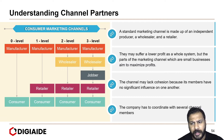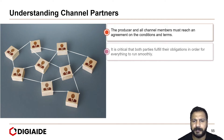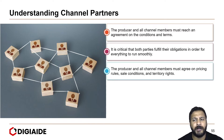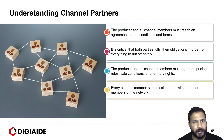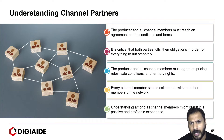The company has to coordinate with several channel members at the same time. The producer and all channel members must reach an agreement on conditions and terms. It is critical that both parties fulfill their obligations in order for everything to run smoothly. They must agree on things like pricing rules, sales conditions, and especially territory rights. Every channel member should collaborate with the other members of the network, as an understanding among all channel members might result in a positive and profitable experience for the company.